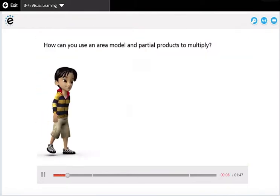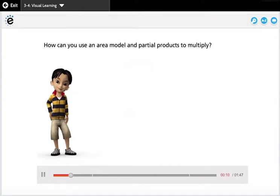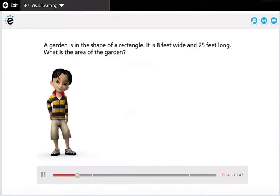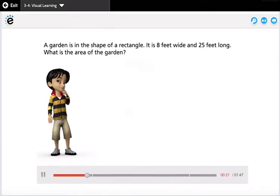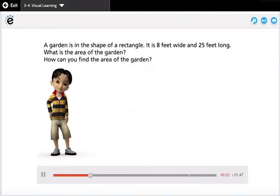How can you use an area model and partial products to multiply? A garden is in the shape of a rectangle. It is 8 feet wide and 25 feet long. What is the area of the garden? How can you find the area of the garden?